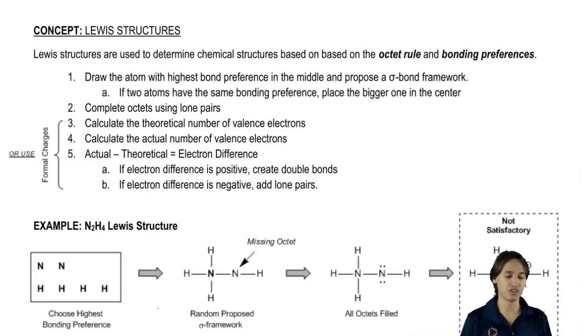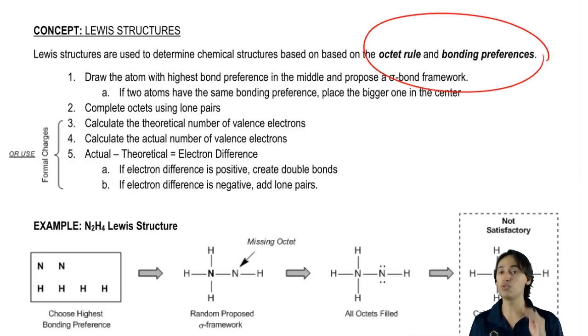And back in the day, you learned a set of rules in Gen Chem that you're supposed to remember about computing theoretical number of valence electrons and then subtracting electrons. But if you already have knowledge of the octet rule and bonding preferences, it turns out we can do almost all of these Lewis structures just on that knowledge.